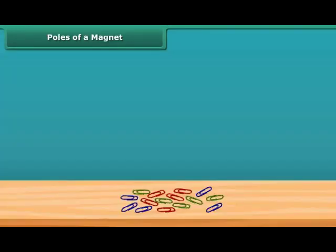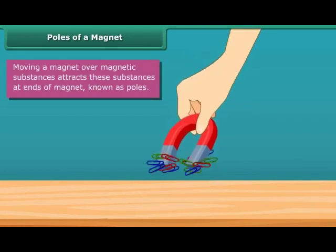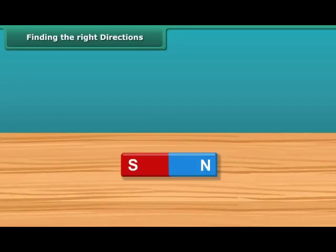When you move a magnet over magnetic substances, you will see that these substances get attracted to particular parts of the magnet only. These are generally the two ends of the magnet. These ends are called the poles of the magnet.